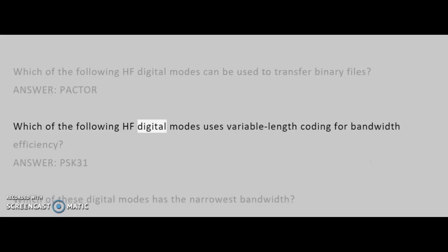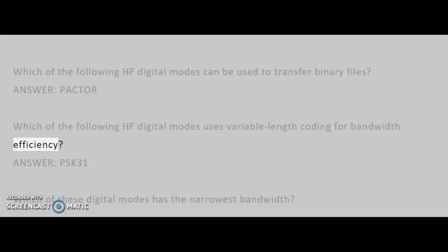Which of the following HF digital modes uses variable-length coding for bandwidth efficiency? Answer: PSK31.